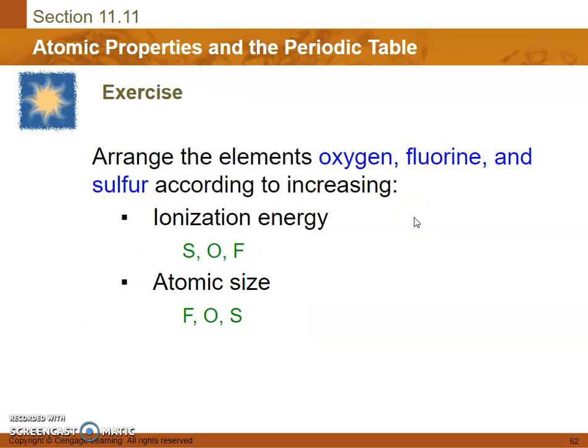Exercise. Arrange the elements oxygen, fluorine, and sulfur according to increasing ionization energy. Well, sulfur has the most, then oxygen, then fluorine, because it increases as we go up and to the right.